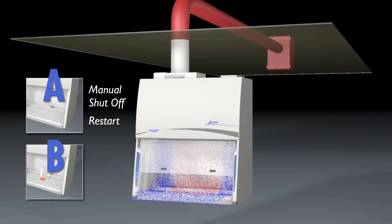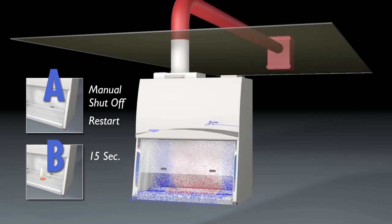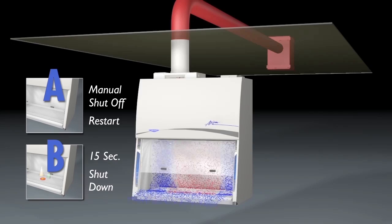All Type B cabinets must detect an exhaust failure in less than 15 seconds and then simply shut down all internal blowers.